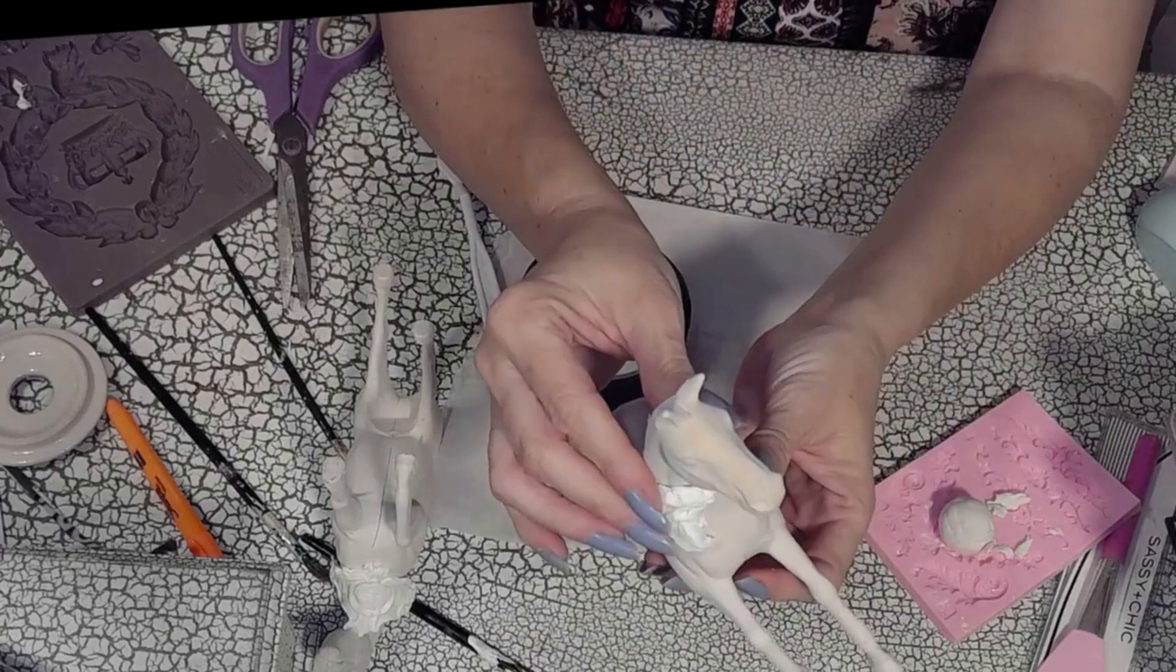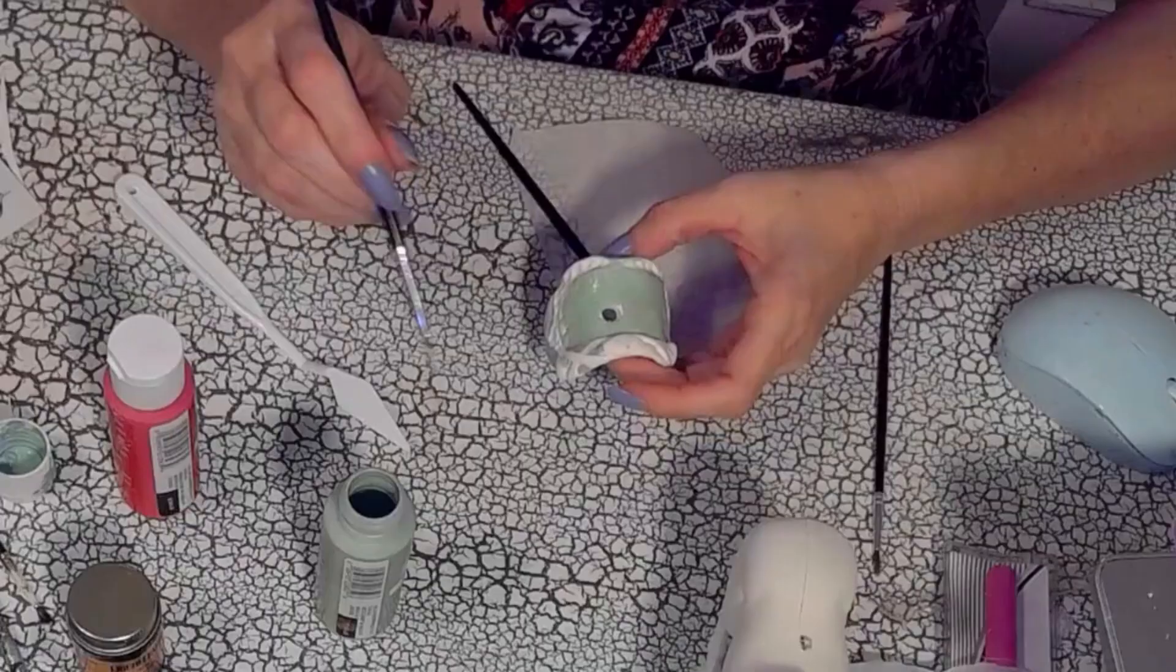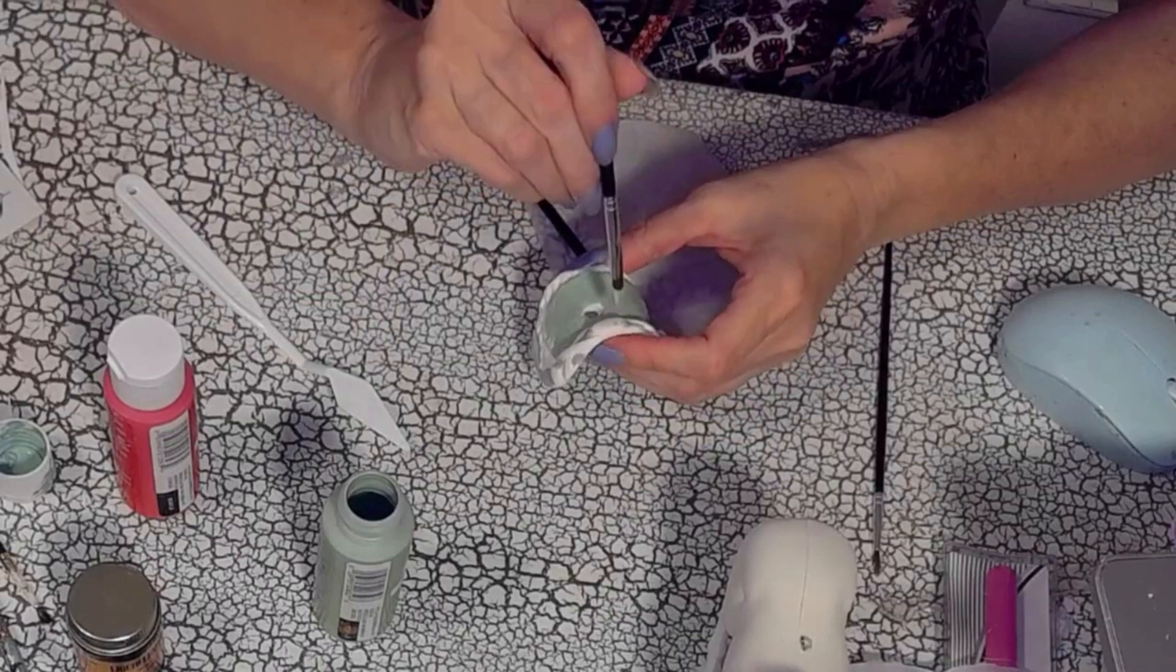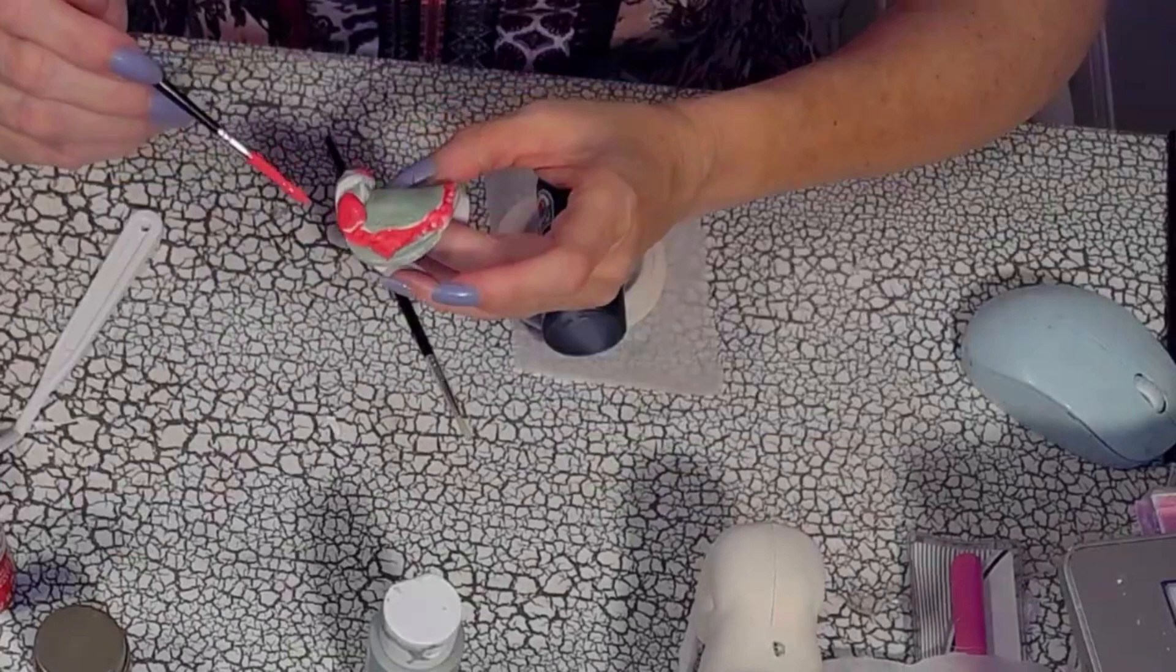And here you can see all the little saddles that I made for my horsies. Using my plaid family of products, of course, I am now painting using all their acrylic paints. So I think this is folk art or apple barrel, but I love the colors that they have and it's perfect to paint all of my embellishments for my little horsey.